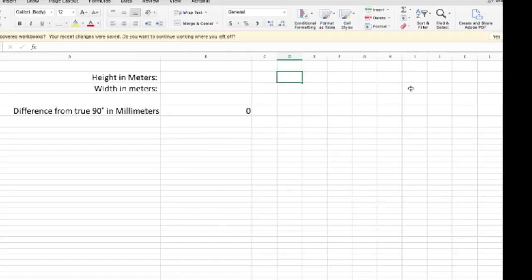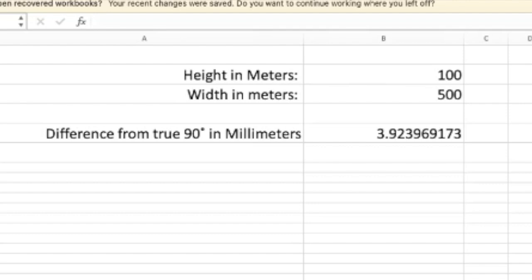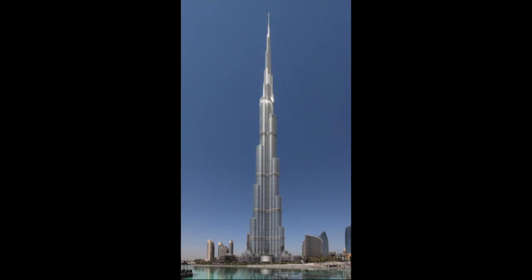Here I programmed that formula into a spreadsheet. And so if we just type things in in meters, so here we had a building that was 100 meters tall, and 500 meters wide. Then we can see that the distance from true 90 degrees in millimeters is the same that we got before, just under four millimeters. And so students can change these values to any building in the world they want.